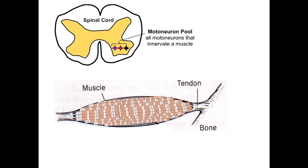Each motor neuron, however, will innervate a different set of muscle fibers. The purple motor neuron, for example, will innervate only one muscle fiber. The red motor neuron will innervate three other fibers, while the black motor neuron will innervate five fibers. Thus, each motor neuron innervates a unique set of fibers. The number of muscle fibers that are innervated by a motor neuron is called its motor unit.